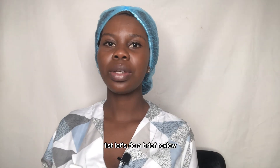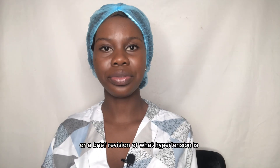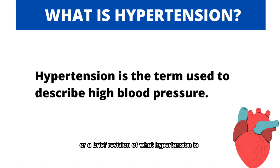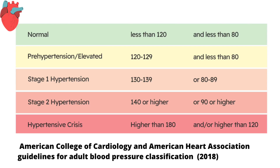First, let's do a brief review of what hypertension is. Hypertension is a medical term used to describe high blood pressure. According to the table by the American College of Cardiology and American Heart Association that classifies adult blood pressures, normal is classified as less than 120 for systolic and less than 80 for diastolic.